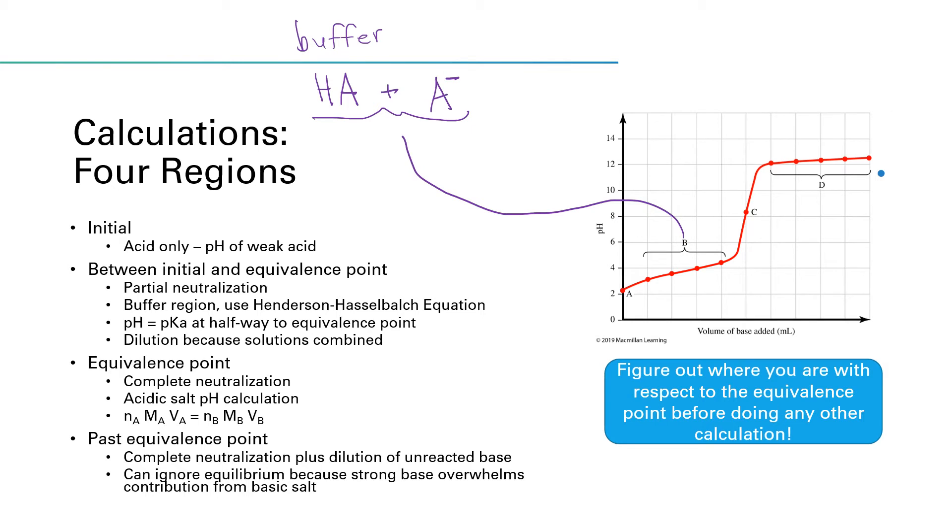And then to calculate the pH, you have to consider that you have both HA and A- present and use the Henderson-Hasselbalch equation. Something really interesting happens at the halfway point, because at the halfway titration point, pH will be equal to pKa. What I mean by the halfway titration point is, let's see, this equivalence point occurs at this volume, which is not labeled. Let's see, it's one, two, three, four, five squares over.